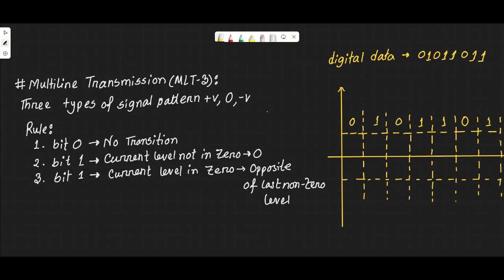Asalaamu alaikum everyone. Today in Data Communication we are going to talk about Multi-Level Transmission, MLT3. MLT3 is Multi-Level Transmission and we have three types of signal patterns: positive voltage, zero, and negative voltage.